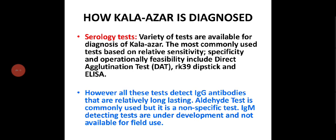Kalazar is diagnosed first by serological tests. The most commonly used tests, based on sensitivity, specificity, and operational feasibility, include the Direct Agglutination Test (DAT), rK39 dipstick, and ELISA. However, all these tests detect IgG antibodies, which are relatively long-lasting. The aldehyde test is commonly used but is not specific.